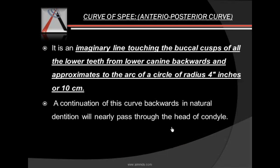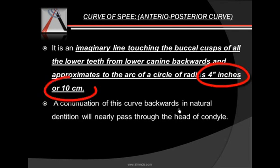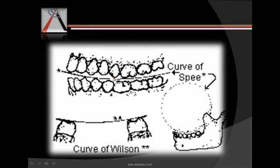Then we have the curve of Spee, which is an anterior-posterior curve — an imaginary line touching the buccal cusps of the lower teeth from the lower canine backwards. These cusps approximate to an arc of a circle with a radius of four inches or 10 centimeters. If you draw a line touching the buccal cusps, you get a curve, and if you continue this arc backwards it will pass through the head of the condyle. This is your curve of Spee.